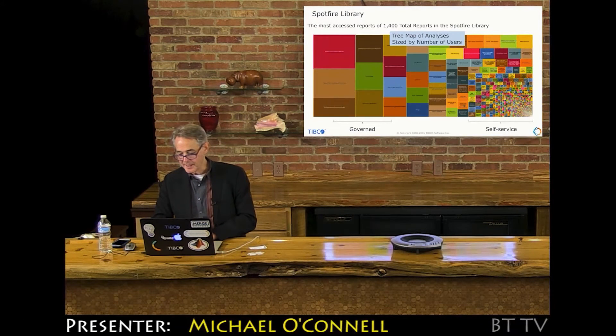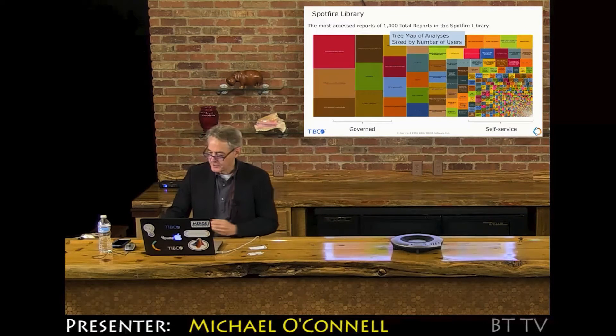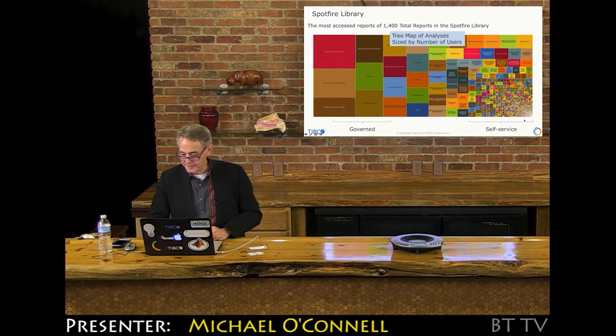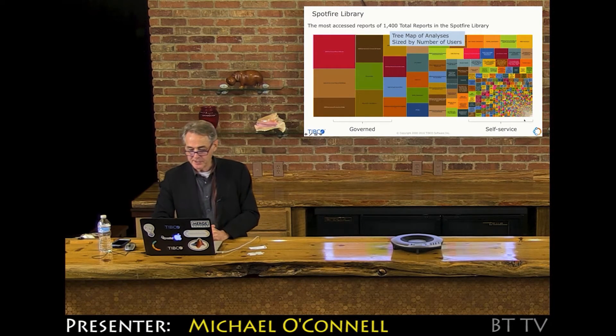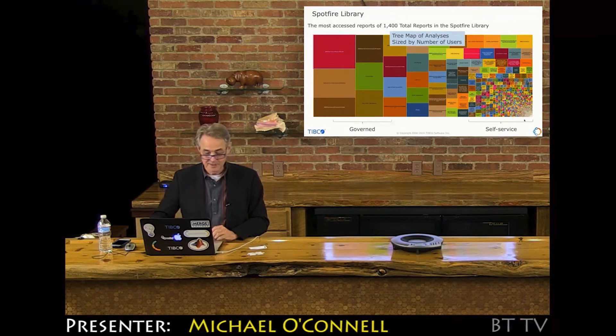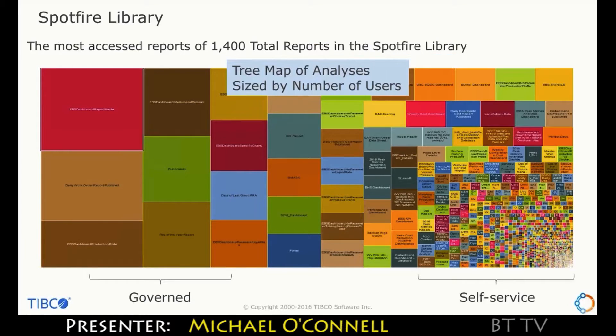I want to show you the type of usage they have. This is a tree map of all the analysis files in their Spotfire library, sized by the number of users. The lower right, these are dashboards and analyses being created by somebody and often just used by themselves or maybe shared with their colleague.